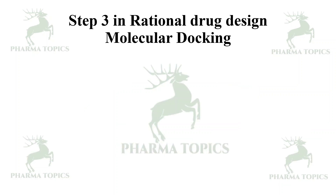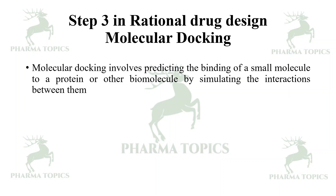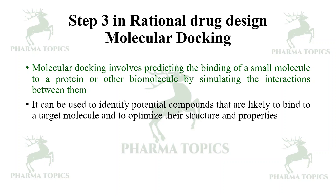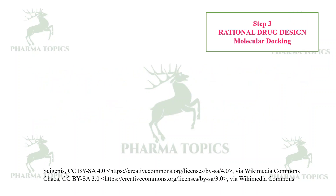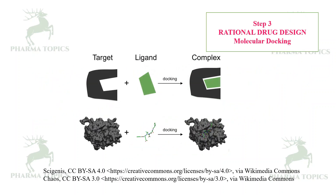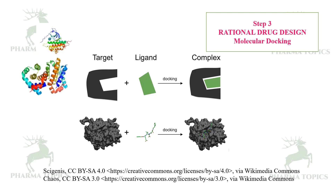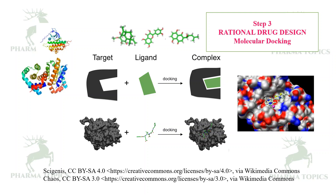Step three is molecular docking. Molecular docking involves predicting the binding of a small molecule to a protein or biomolecule by simulating the interactions between them. It can be used to identify potential compounds likely to bind to a target molecule and to optimize their structures and properties. First you get the target protein, then you get the target ligand, then you perform molecular docking and study the interactions.